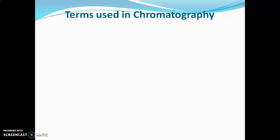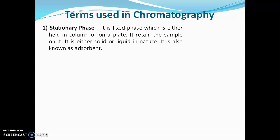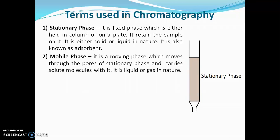Now we will go for terms used in chromatography. First term is stationary phase — it is a fixed phase held either in a column or on a plate; it retains the sample on it and is either solid or liquid in nature, sometimes also known as adsorbent. Second term is mobile phase — it is a moving phase which moves through the pores of the stationary phase and carries solute molecules with it; it is either liquid or gas in nature.